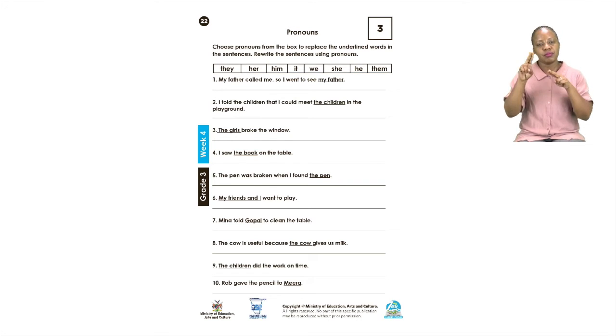So, now you need to rewrite the sentence using the correct word. Now, remember to put a capital letter where it needs to be and a full stop at the end. Let us do number three together. Number three says, The girls broke the window. We are going to be replacing the girls with a pronoun. Now, it seems like there are a lot of people. So, we are going to use either they or them again. So, we are going to say, they. Let's replace the girls with they and see if our sentence makes sense. They broke the window. Yes, it makes sense. So, we are going to write our number three.